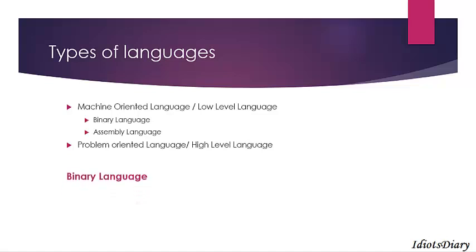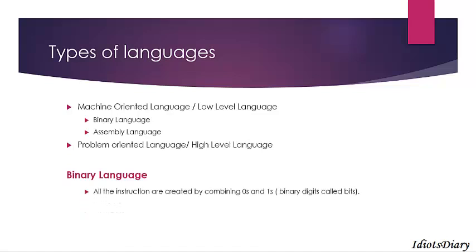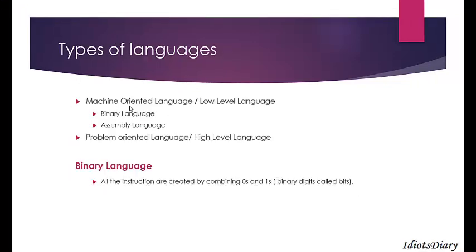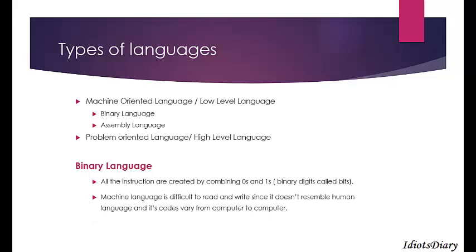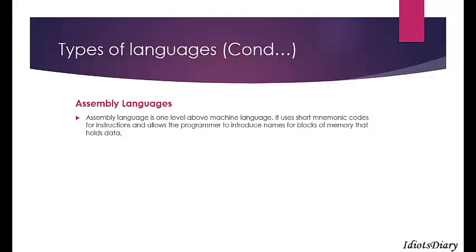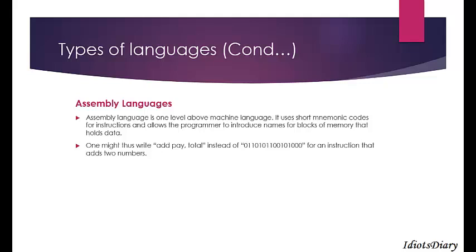Binary languages are those in which instructions are created by combining zeros and ones. The computer is created with billions of transistors, and each transistor can be thought of as a switch which can be on or off. To turn the switch on, we pass instruction 1, and to turn it off, we pass instruction 0. Assembly language is one level above binary language. It uses short mnemonic code to write instructions and allows the programmer to introduce names for memory blocks which hold data. For example, if you want to add two entities such as pay and total, you write 'add pay total' instead of a complicated sequence of binary digits.